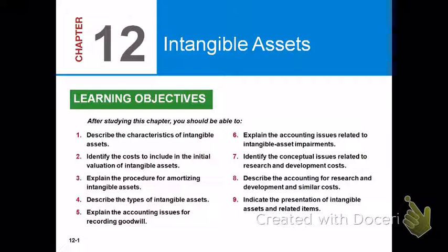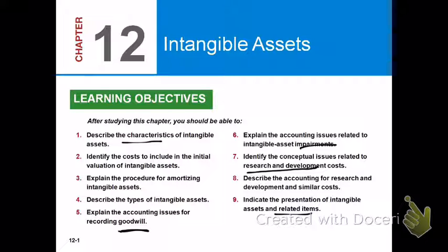This is the first of four recordings for chapter 12. Chapter 12 is going to talk about intangibles, so you need to be able to describe the characteristics of them, identify the costs, explain how amortization works, what are the different types of intangibles, what we have to deal with with goodwill, impairments, what happens with research and development, and presentation of intangibles.